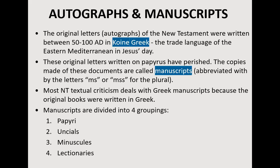There were plenty of copies made of these documents, which we call manuscripts. When we talk about New Testament textual criticism, we're talking mainly about Greek manuscripts. Please note that textual criticism doesn't mean we're criticizing them — in the same way apologetics doesn't mean you're apologizing. Textual criticism means examining the different documents and deciding what was part of the original text. Manuscripts are divided into four groupings: papyri, uncials, minuscules, and lectionaries.